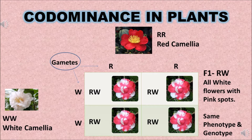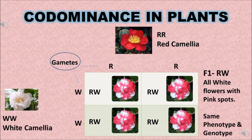Co-dominance in plants: the example is camellia flower plants. In a cross between a red and white camellia plant — red flower is homozygous dominant (RR) and white flower is homozygous dominant (WW) — when we cross and draw a Punnett square, we get all flowers with white background and red spots. They are all heterozygous (RW), showing the same phenotype, demonstrating co-dominance as both alleles are expressed.